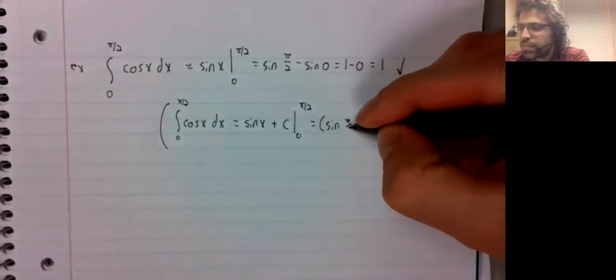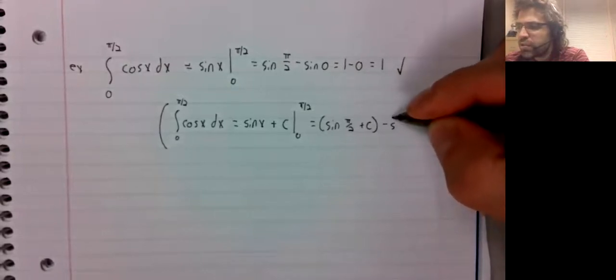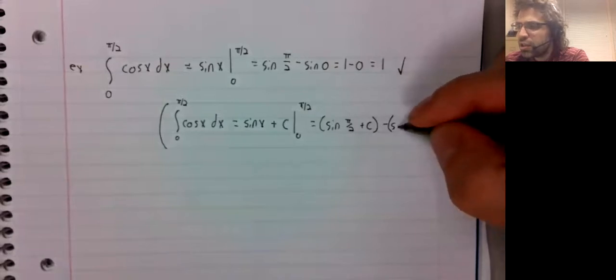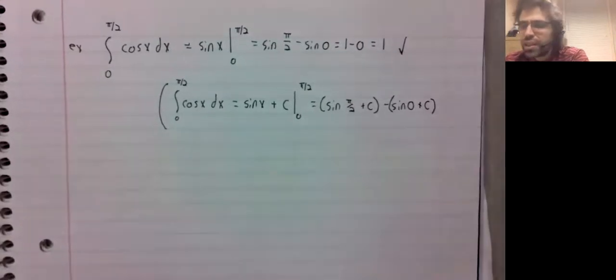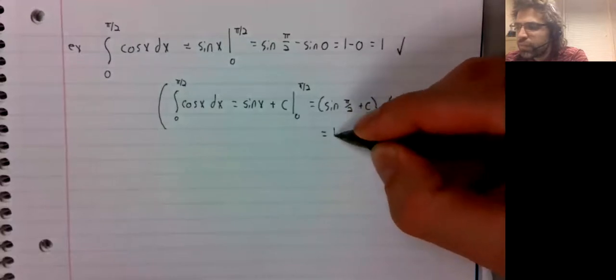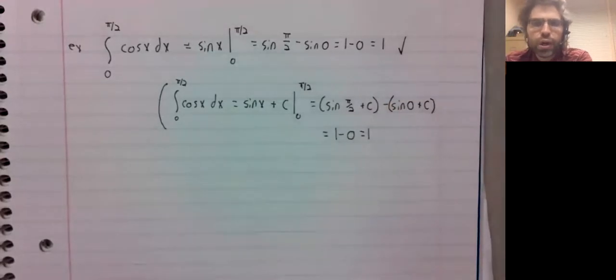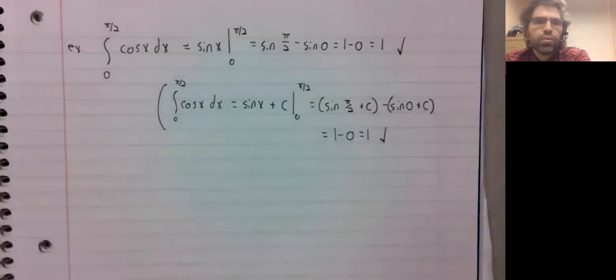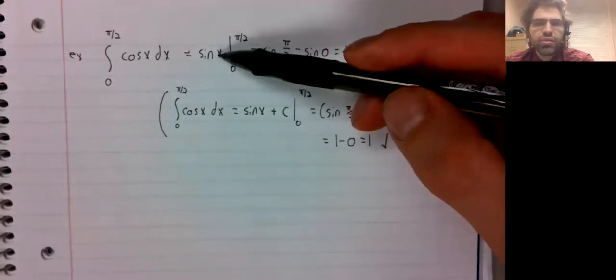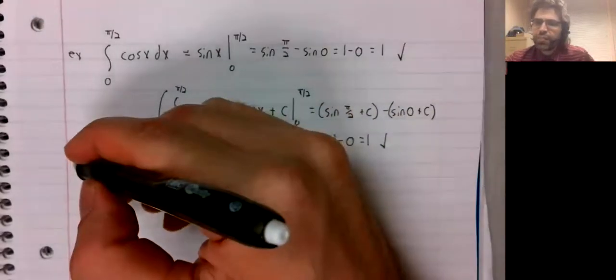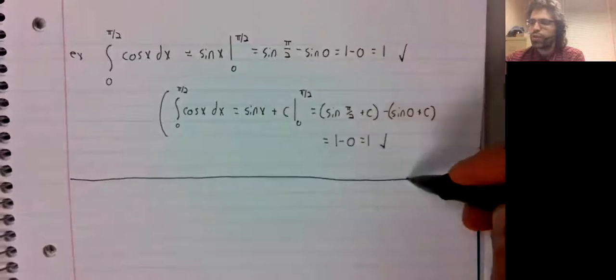But you see what happens. We'll have a c here, a negative c here, and a negative c here. And our c's will cancel each other out. So if we're using the fundamental theorem, we just use the simplest antiderivative we have. No need to add any sort of constant.